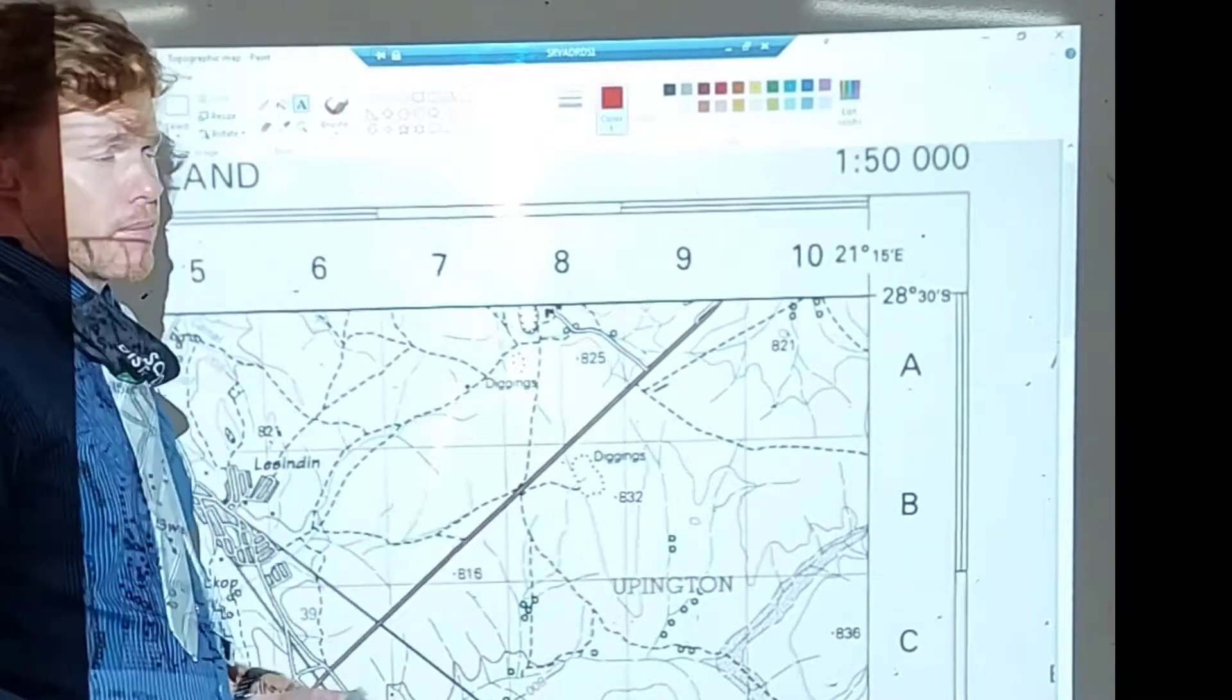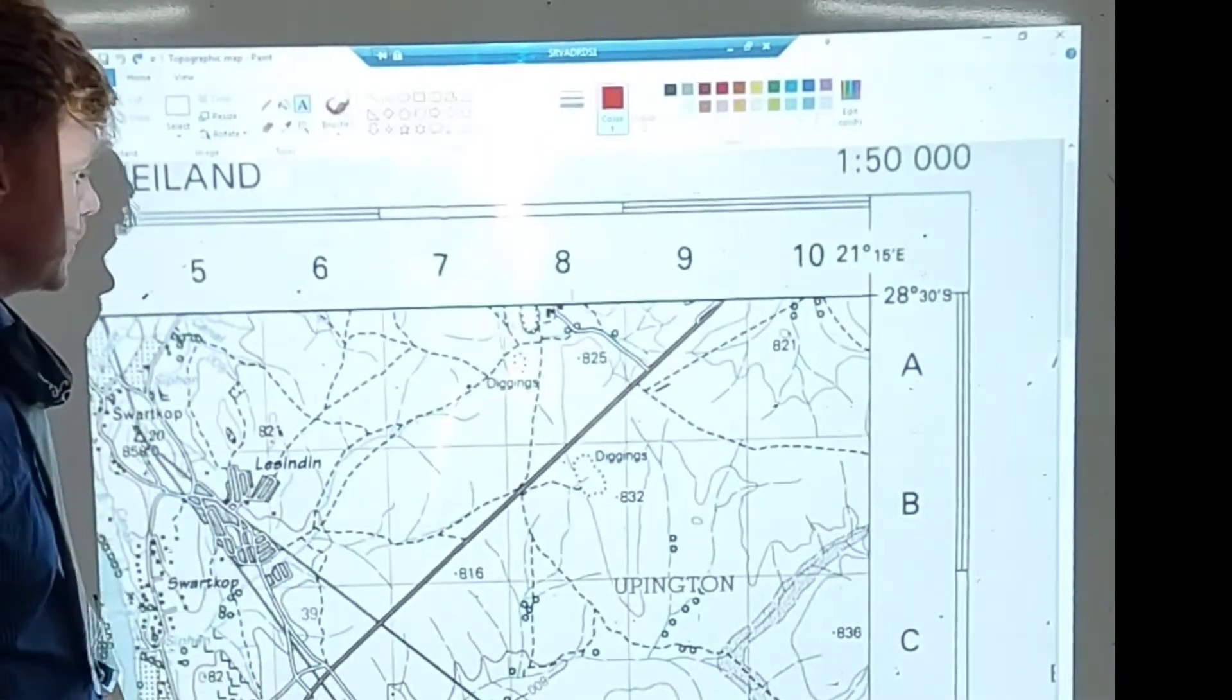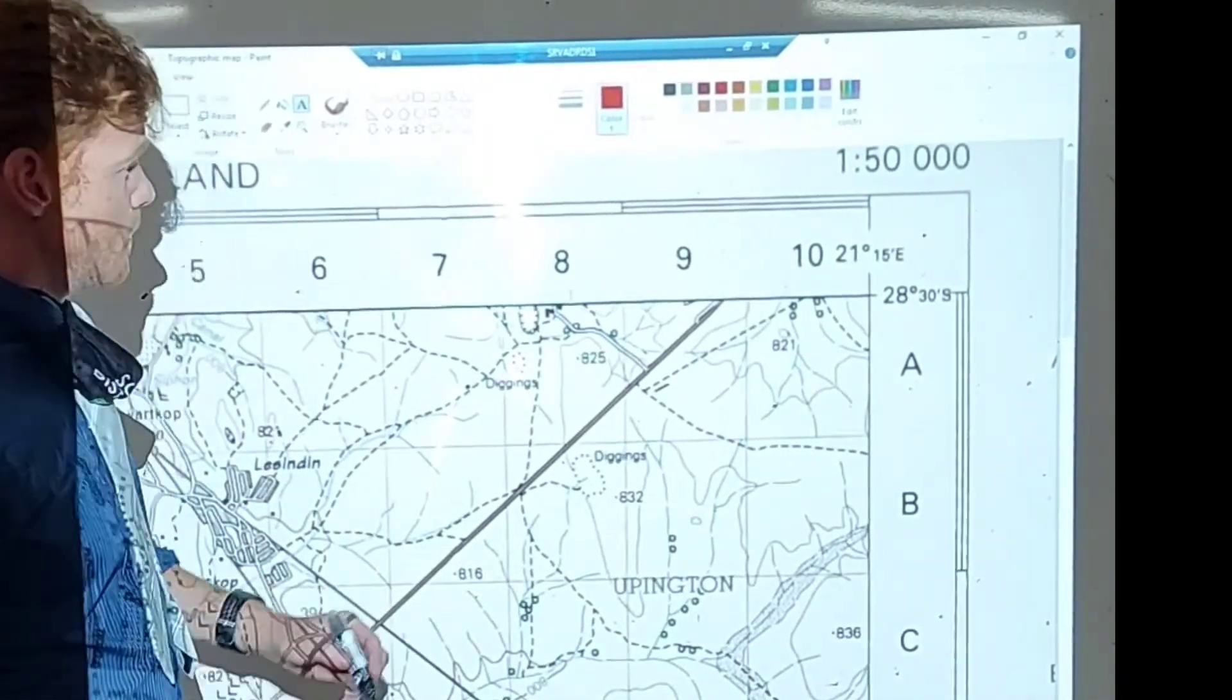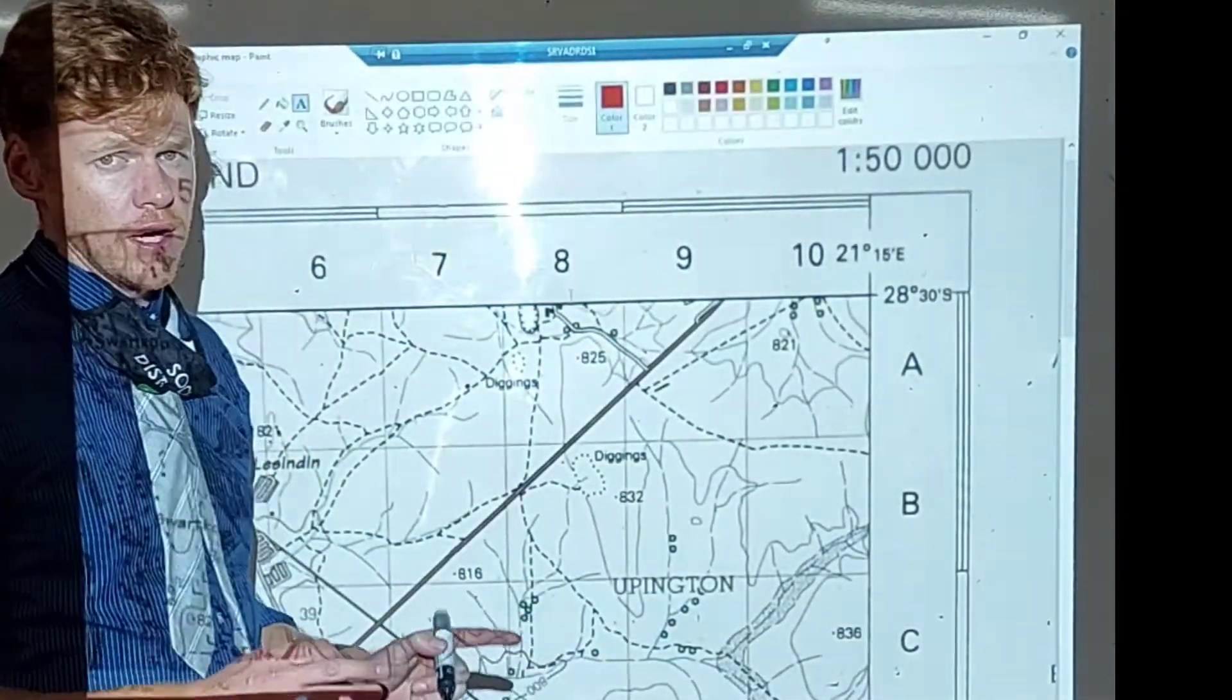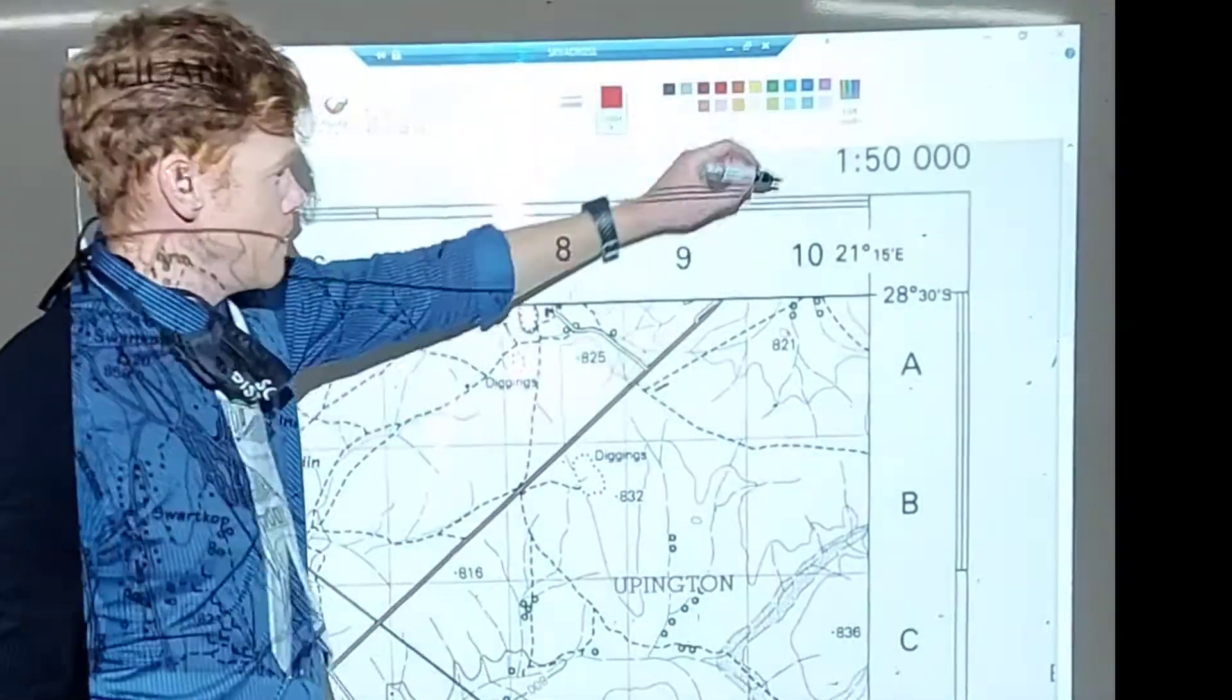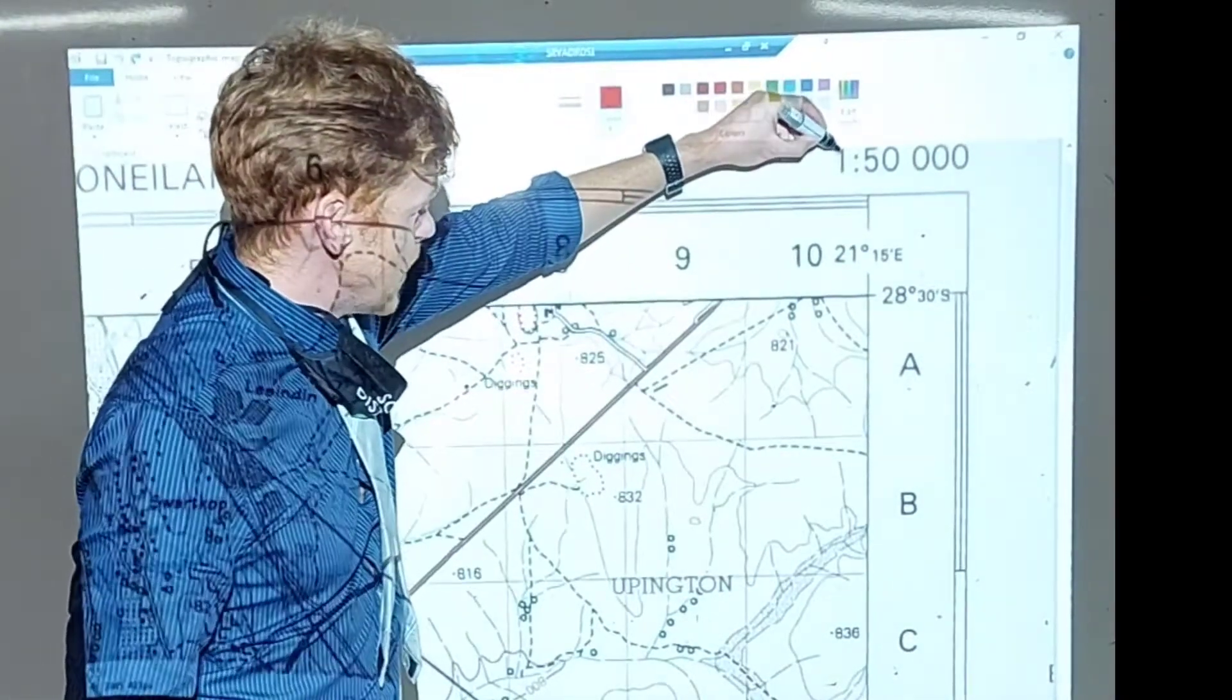So we've got our topographic map. I've zoomed into an area, and you'll notice right on top, I spoke about this in my first video on how to work out coordinates, I mentioned the scale, and we've got the number here.